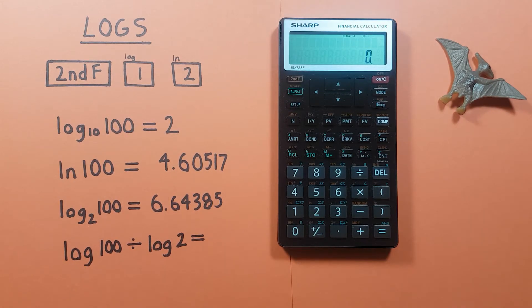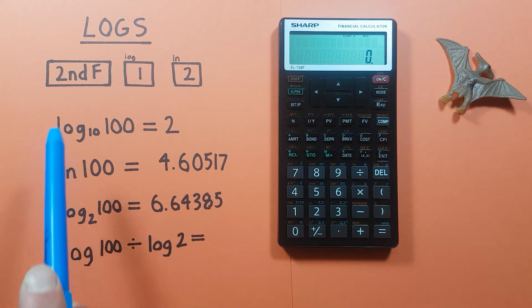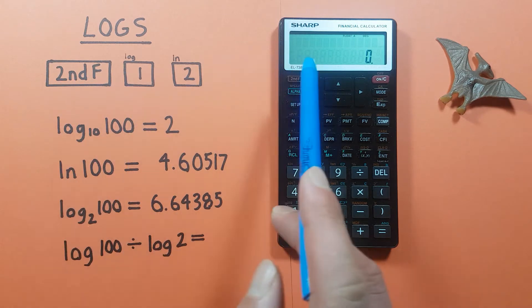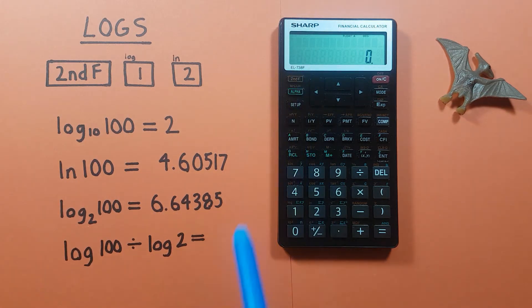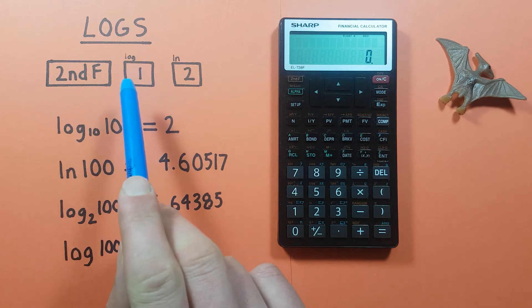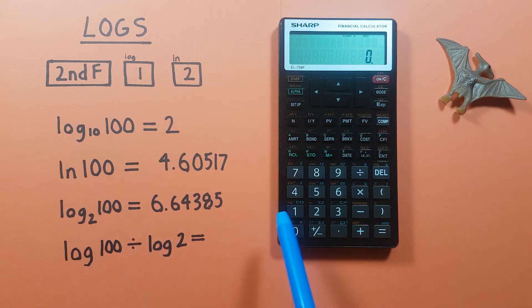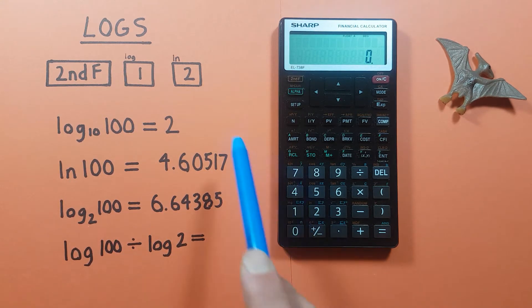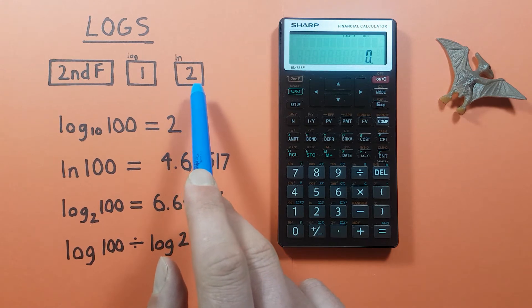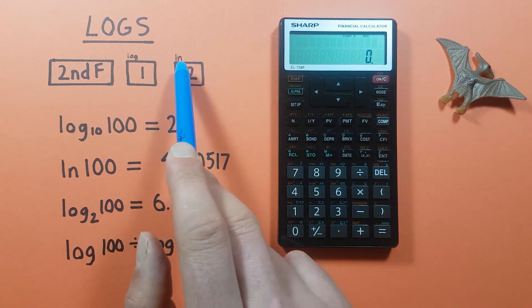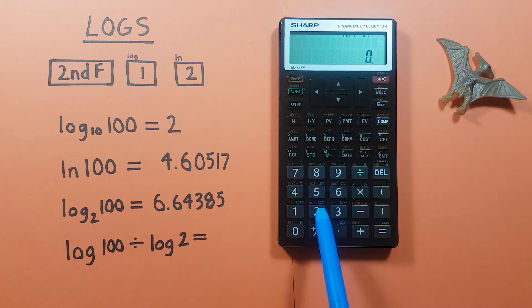Hello and welcome to HD Calcs. I'm Rick and in this video we're going to look at how we can find logs on the Sharp EL-738 financial calculator. To do this we'll be using the second function key, located here on the top left, as well as the 1 key with the second function of log, located here, and the 2 key with the second function of natural log, or ln, located here.